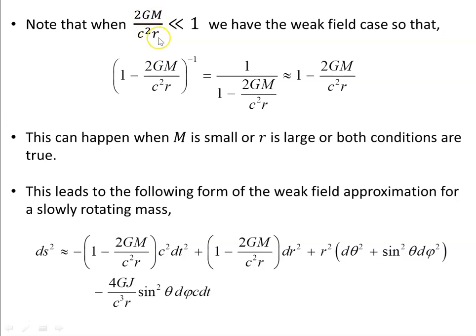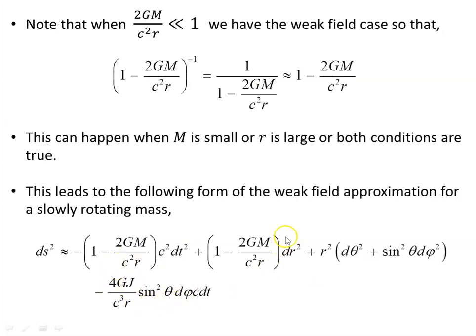Note that when 2GM/(c²r) is much less than one — the weak field case — we can approximate the metric coefficient. This condition holds when M is small, or r is large, or both. This leads to the weak field approximation form for a slightly rotating mass, with the Schwarzschild part modified and the Lense-Thirring term appended, which we will use in the following video.